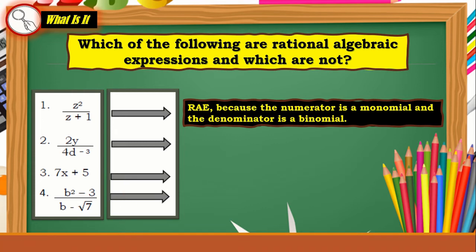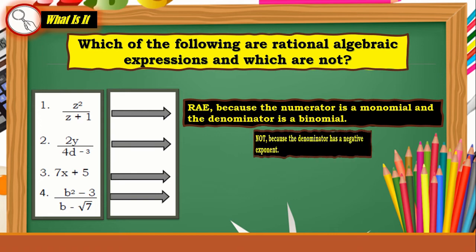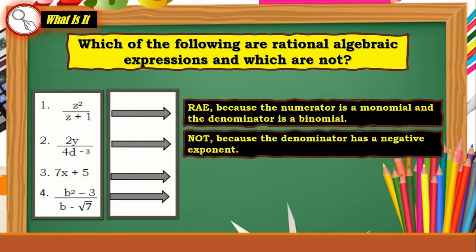How about number two: 2y / (4d⁻³)? It is not a rational algebraic expression because the denominator has a negative exponent, which does not make it a polynomial.